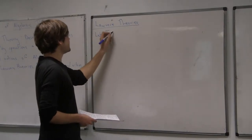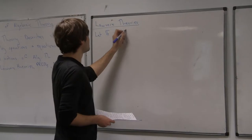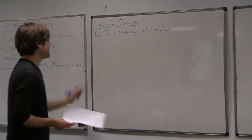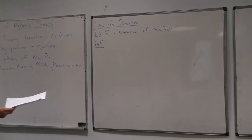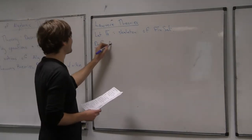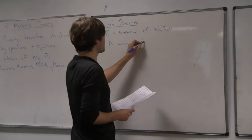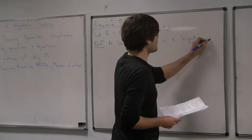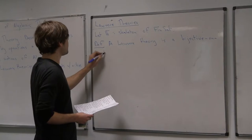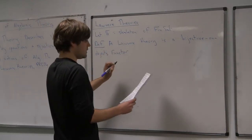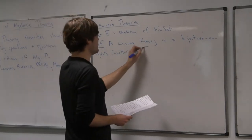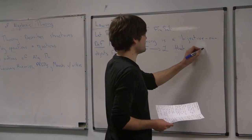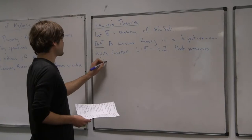First of all, let F be a skeleton of the category of finite sets. Then my definition of a Lawvere theory — which might be controversial — is: it's a bijective-on-objects functor L from F to some other category, curly L, that preserves finite coproducts.